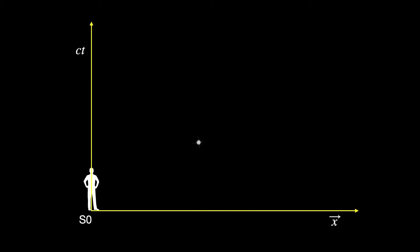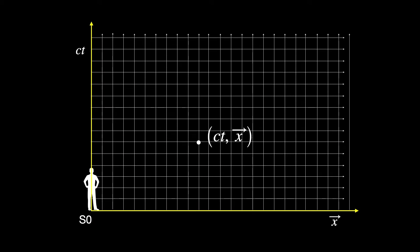How does an observer assign space and time coordinates to a given event? Trivial, right?